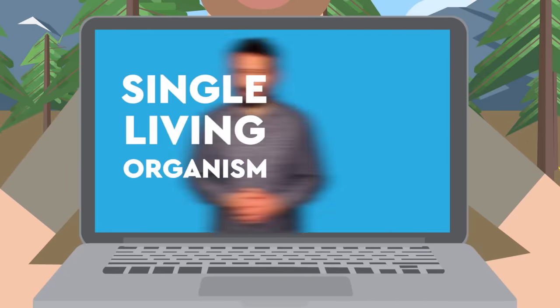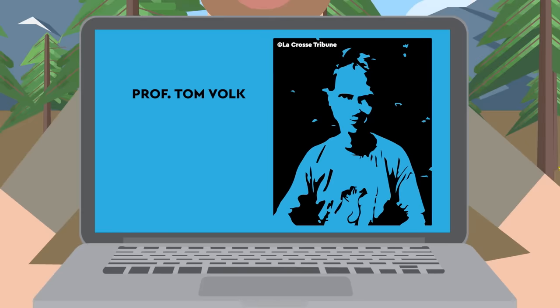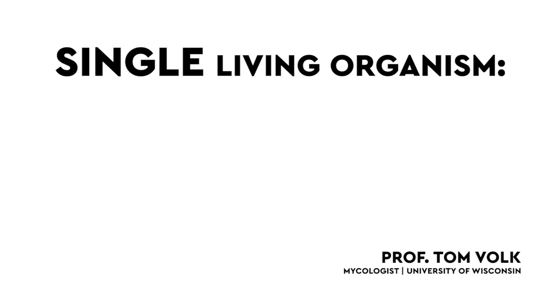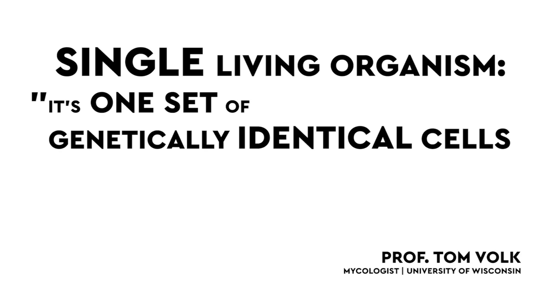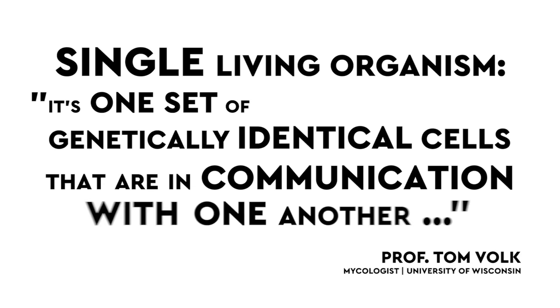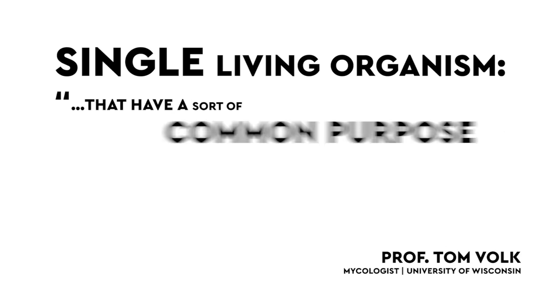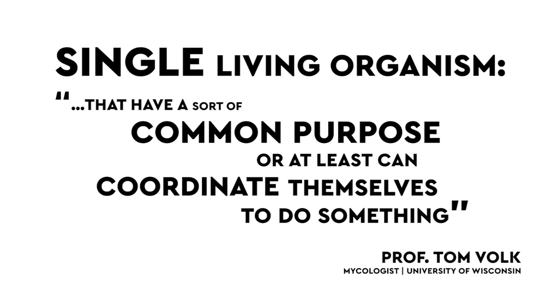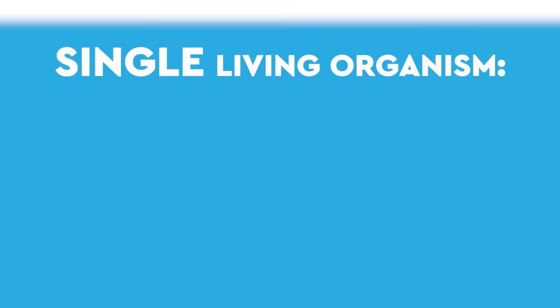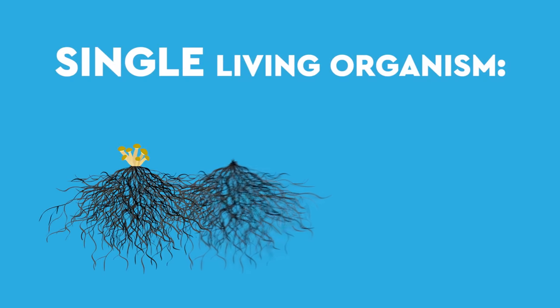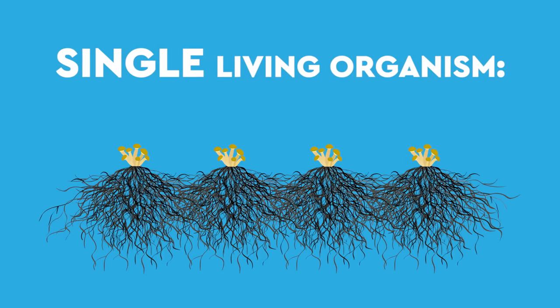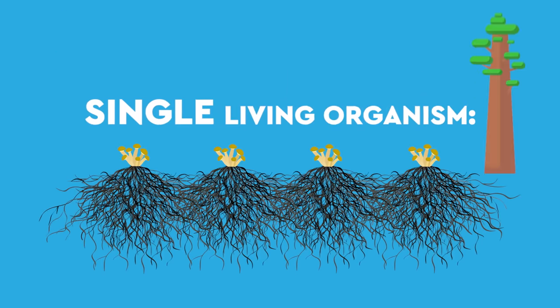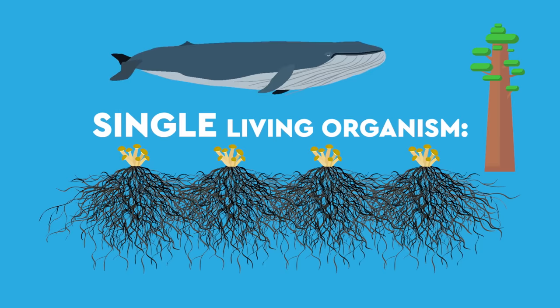Now the discovery of the humongous fungus sparked debate as to what constitutes a single living organism. But it can be succinctly summed up by biology professor Tom Volk: It's one set of genetically identical cells that are in communication with one another, that have a sort of common purpose, or at least can coordinate themselves to do something. Which is exactly what the honey fungus is. Meaning this is indeed a single living organism, just like the giant sequoia, or the blue whale.